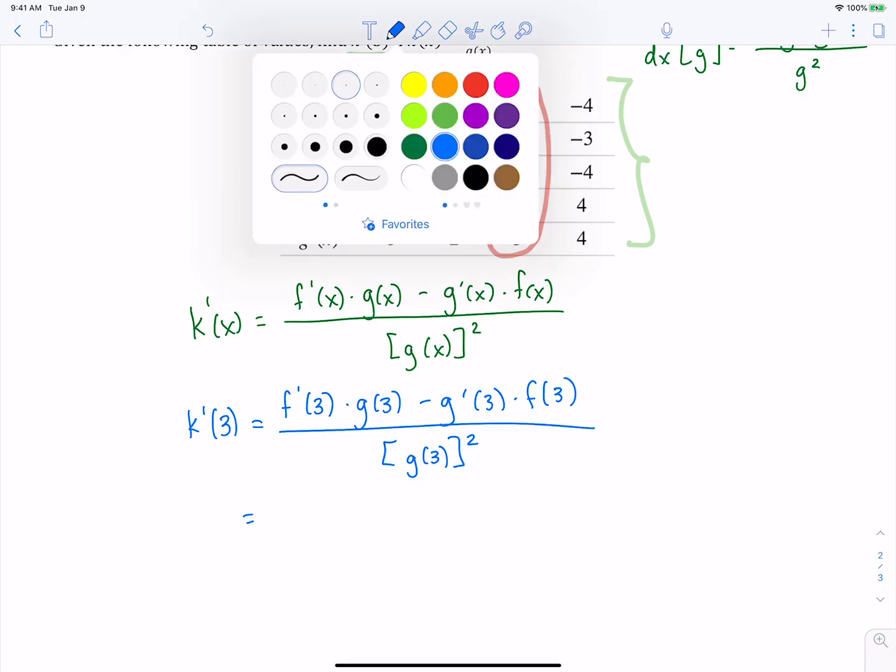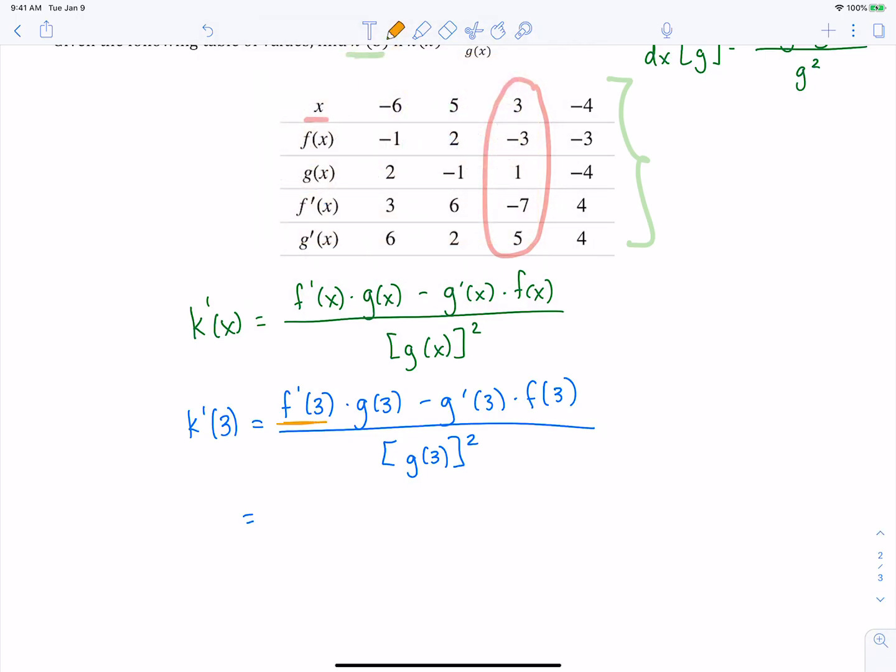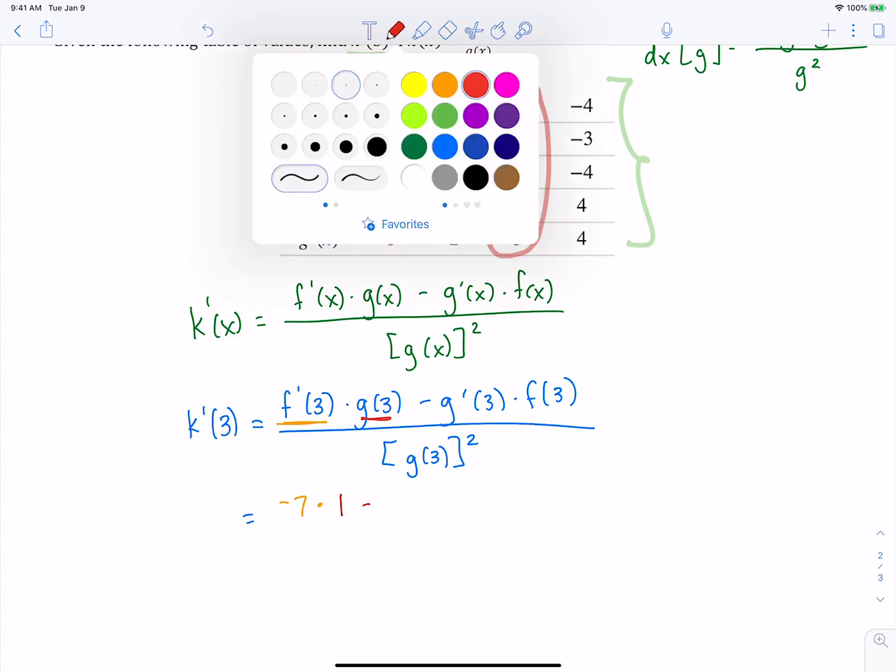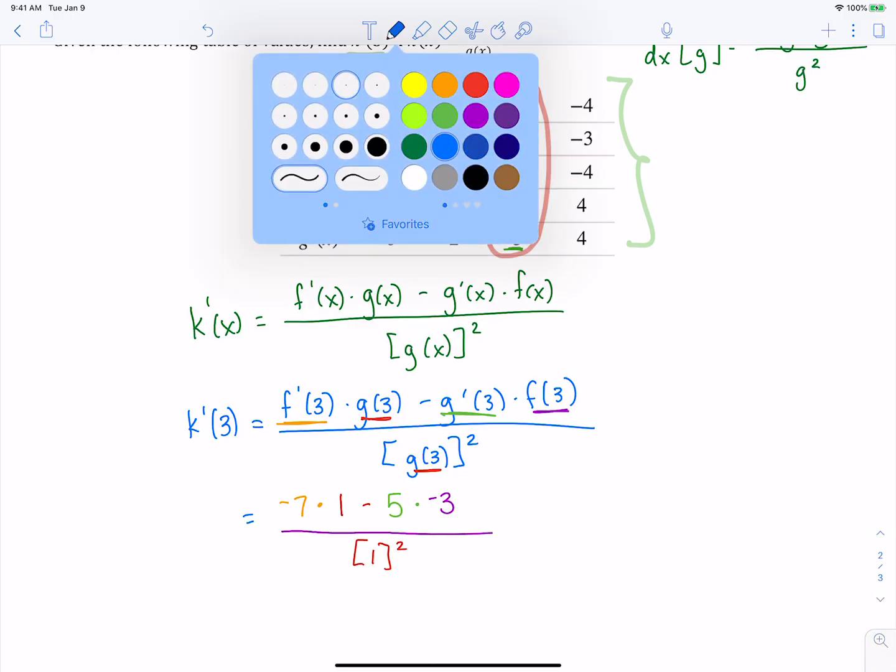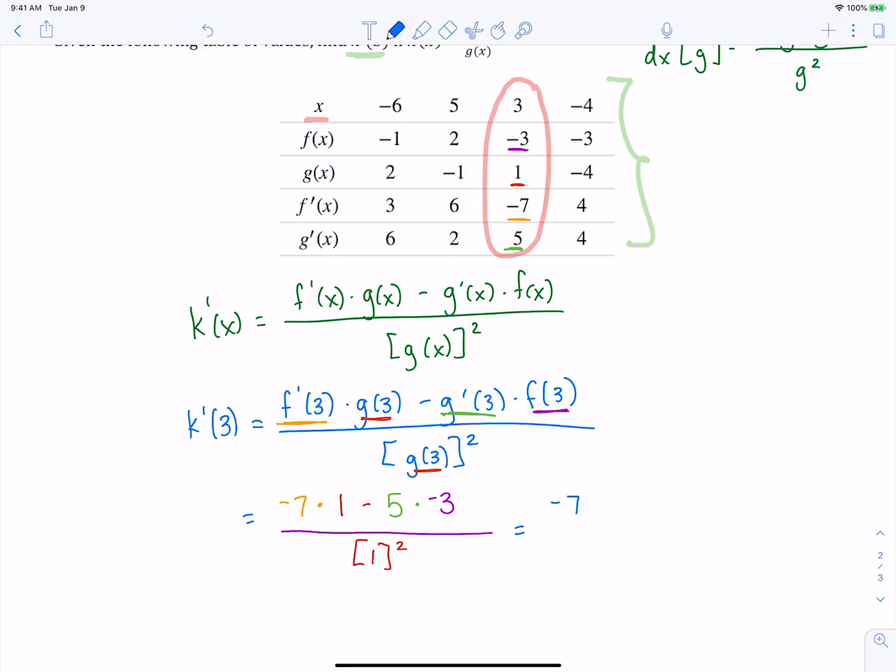So this is equal to f prime of 3, f prime of 3 is negative 7 times g of 3, g of 3 is 1 minus g prime of 3, g prime of 3 is 5 times f of 3, f of 3 is negative 3. And then divided by g of 3 again, which is still 1. And we're going to have 1 squared on the bottom. And now we just need to do a little bit of arithmetic here. So we have negative 7 minus negative 15 over 1. So negative 7 plus 15, and we get 8.